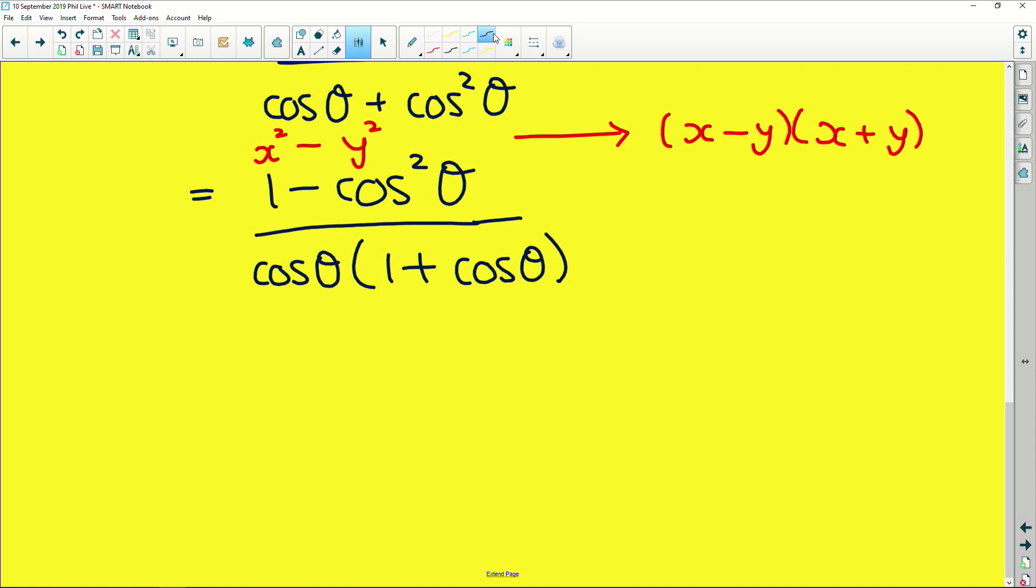So if we rewrite this numerator in terms of these two brackets, we're going to get (1 - cos(θ)), because you square root this, multiplied by (1 + cos(θ)). And our denominator stays the same.